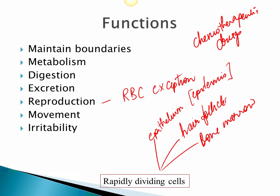Bone marrow depression occurs because chemotherapy drugs attack bone marrow cells — the rapidly dividing blood cell precursors. This causes anemia, and patients are more prone to infections because white blood cell count is low. Nausea and vomiting occur because the GI tract epithelium is not being regenerated fast enough. This is a clinical application of understanding where cells are rapidly dividing.